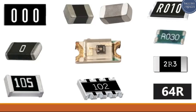Hello everyone. In this video we're going to see the types of SMD resistors. As you can see, we have many types of resistors here. This resistor is a current sense resistor, and this one is also a current sense resistor. The value of this resistor is 0.01 ohms.